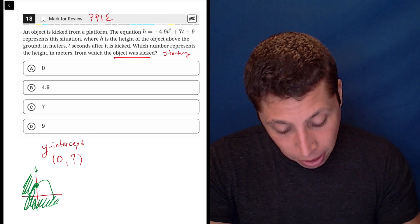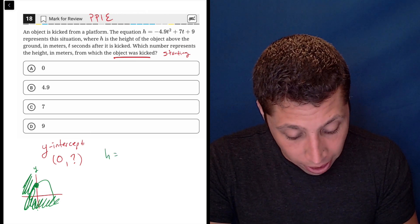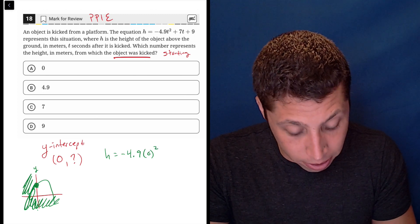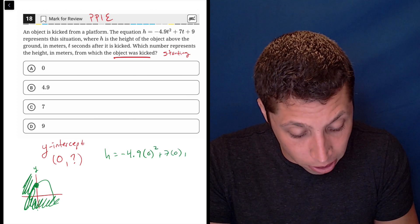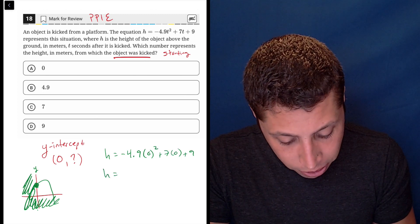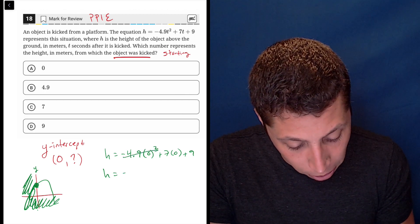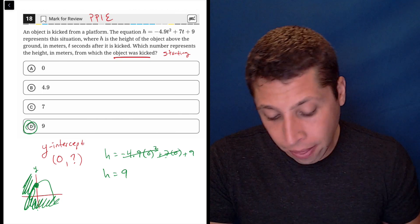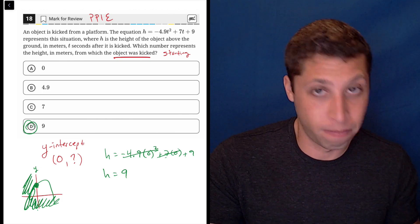So all we care about for the height of a thing is where are we starting from, what's that first point. Let's just take our equation and plug in the point. h is the height, that's what we're looking for: negative 4.9 times zero squared, plus seven times zero, plus nine. Well, that zero is going to do a lot of work for us because this part cancels, this part cancels. And so we're just left with h is nine, and there you go, that's the height of the object from the start.